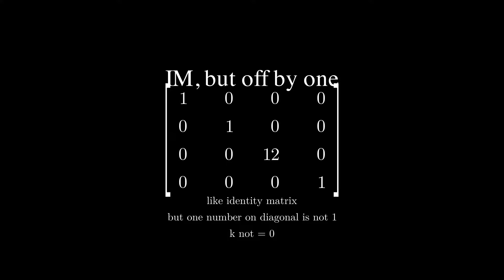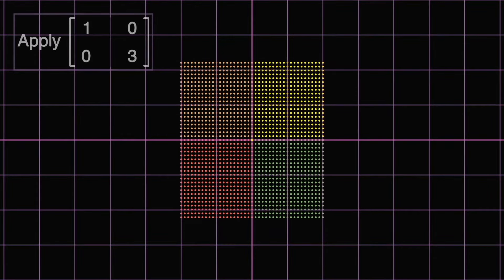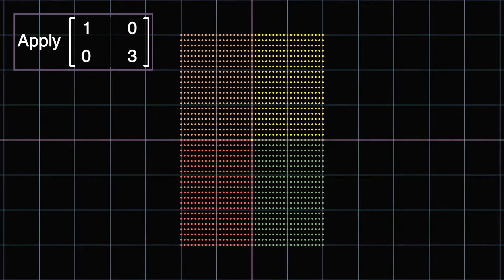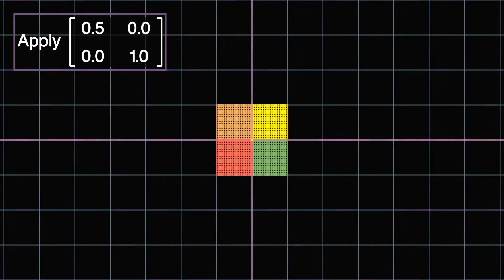The next one is not famous enough to have its own name. But the idea is you take the identity matrix, and modify exactly one number on the diagonal line. And let's call this the off1 matrix. The dots were moving along the y-axis, while the x-coordinate is unchanged. How about a different one? The dots are moving along the x-axis, while the y-coordinate is unchanged.